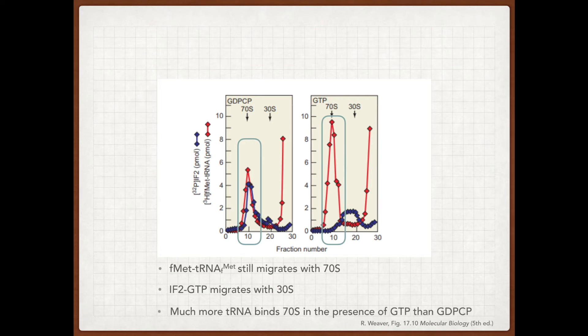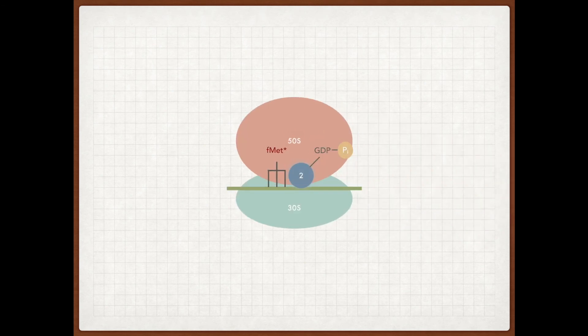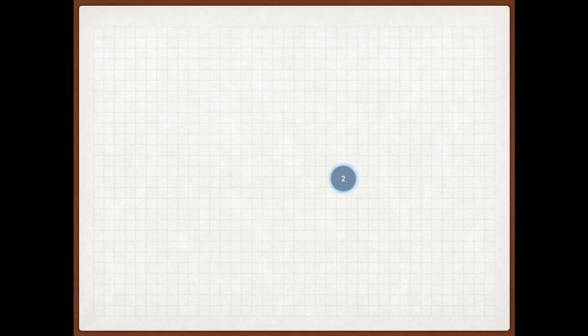Well, if you remember at the beginning, IF2 was limiting, which means that IF2 doesn't act stoichiometrically. Instead, what happens is that when GTP is hydrolyzed on IF2, the IF2 then leaves and dissociates, and it's able to rebind a new molecule of GTP that's in excess. And when it rebinds a new molecule of GTP, it's able to reassociate with a 30S subunit along with initiation factors 1 and 3.